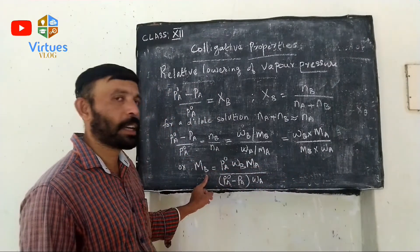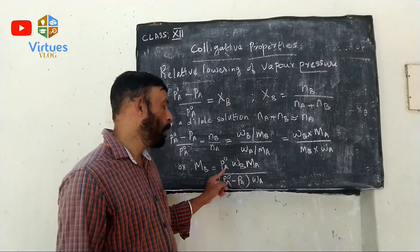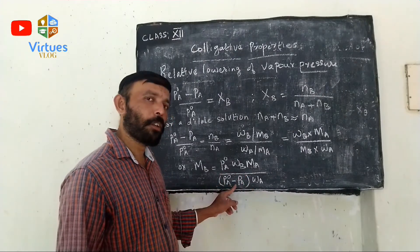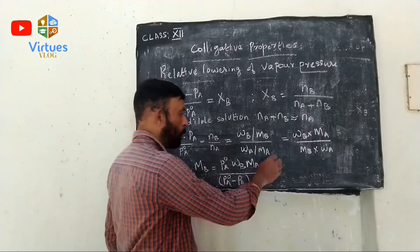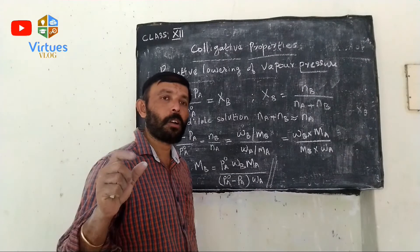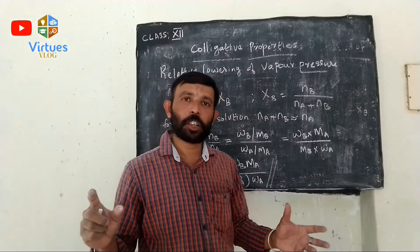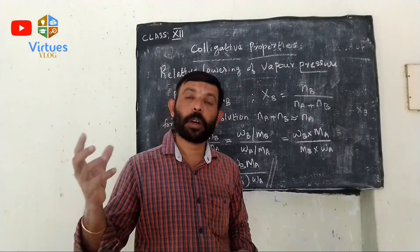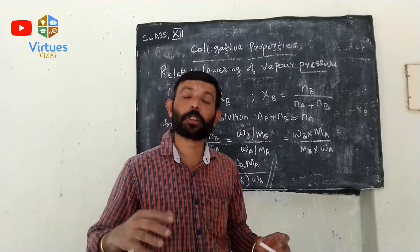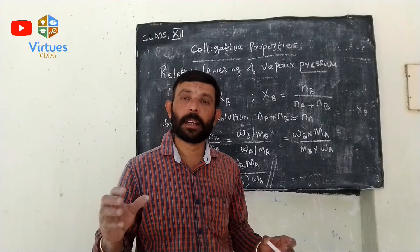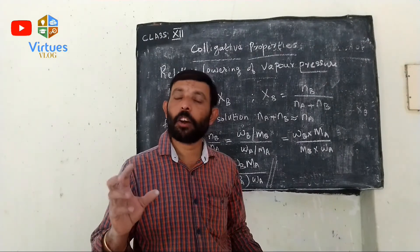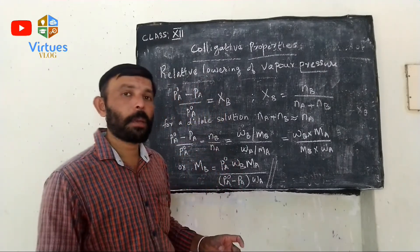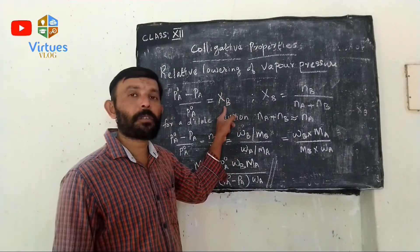By using this equation, we can calculate the molecular mass of a solute — this is an important application of Colligative Properties. The relationship (P0A minus PA) divided by P0A is equivalent to the mole fraction of the solute.